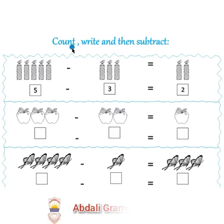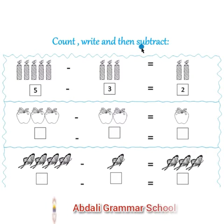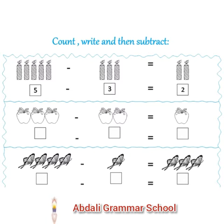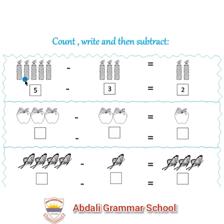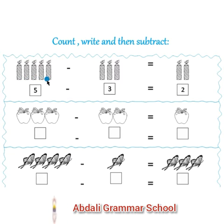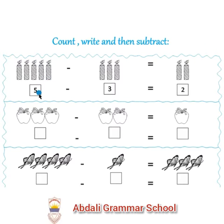Count, write and then subtract. First we count candles. 1, 2, 3, 4, 5. This is number 5.